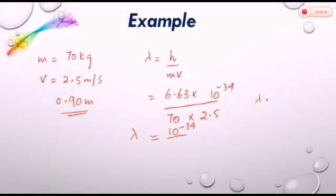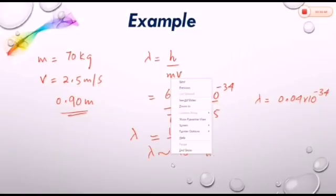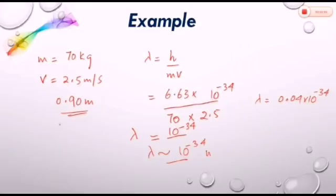This lambda comes out to be about 0.04 into 10 raised to the power minus 34. So lambda is of the order of 10 raised to the power minus 34 meters, which is far less than this width of opening. This is the reason that no diffraction effects would be observed, as this lambda is very small as compared with the width of the gap.